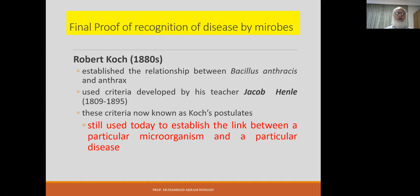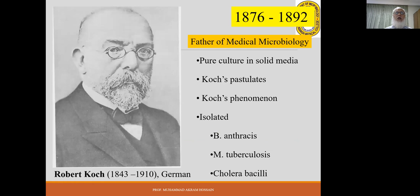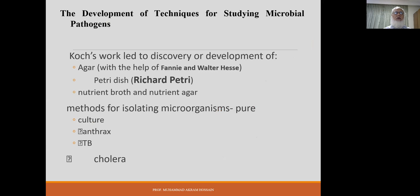Robert Koch is considered the father of medical microbiology. The final proof of disease causation by microbes was established by Koch using criteria developed by his teacher Jacob Henle. Koch contributed pure culture methods in solid media, the Koch postulate, and the Koch phenomenon. He isolated Bacillus anthracis, Mycobacterium tuberculosis, and cholera bacilli during 1876 to 1892 — the golden period of medical microbiology. He developed agar, the petri dish, and other techniques still used today.